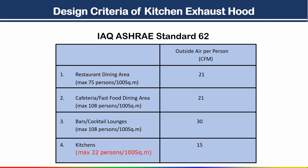In this table you can see indoor air quality requirements as per ASHRAE standard 62. For a restaurant dining area, for 100 square meters the maximum occupancy is 75 percent, and outside air per person is 21 cfm. For a cafeteria it is also 21 cfm. For a bar or cocktail lounge it is 30 cfm. For a kitchen, maximum 22 percent occupancy per 100 square meters, and outside air per person is 15 cfm.